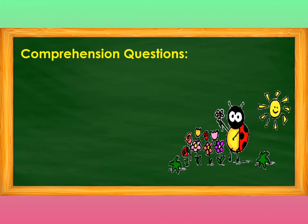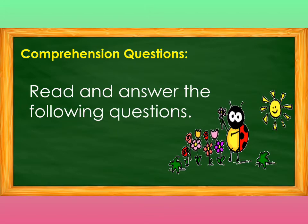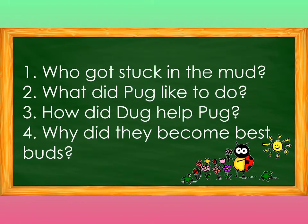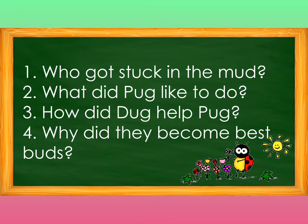Moving on to comprehension questions. Read and answer the following questions. Number 1: Who got stuck in the mud? Number 2: What did Pog like to do? Number 3: How did Dog help Pog? Number 4: Why did they become best bogs?